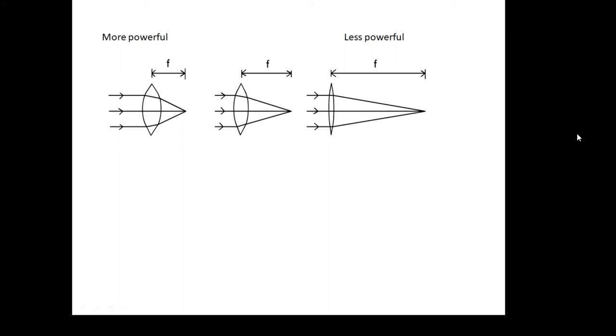An equation you need to know is the power of a lens: P, the power of a lens, equals one over the focal length. Power is measured in diopters (capital D). Focal length is measured in meters. Remember, a very common mistake—if you get this question, a lens with a focal length of 20 centimeters has a power of: P equals one over 0.2, so the power is five diopters. If you're working out the power, don't forget to change it to meters.